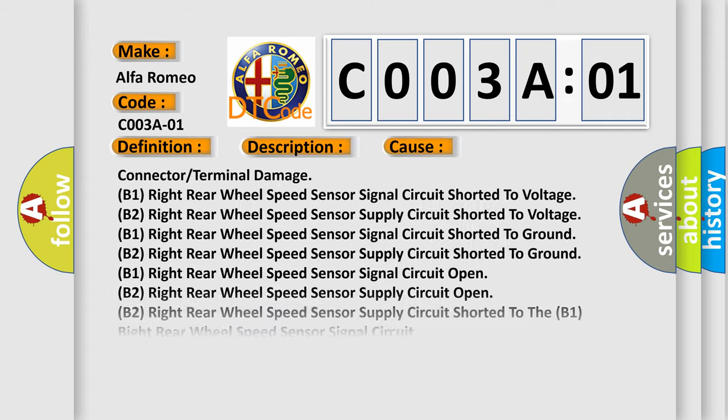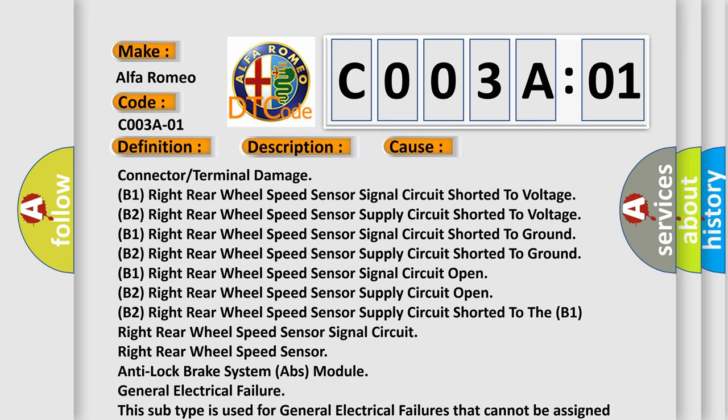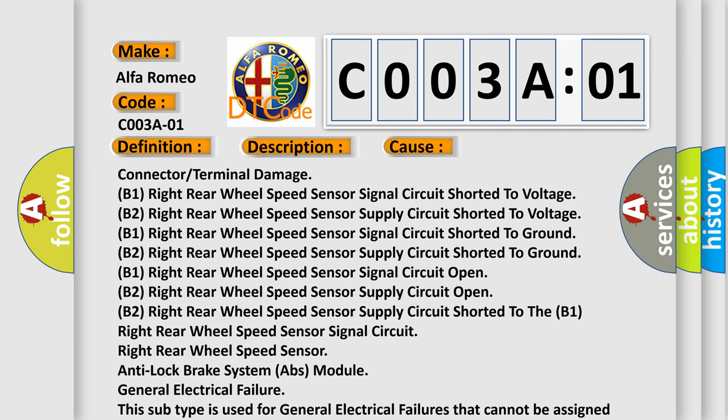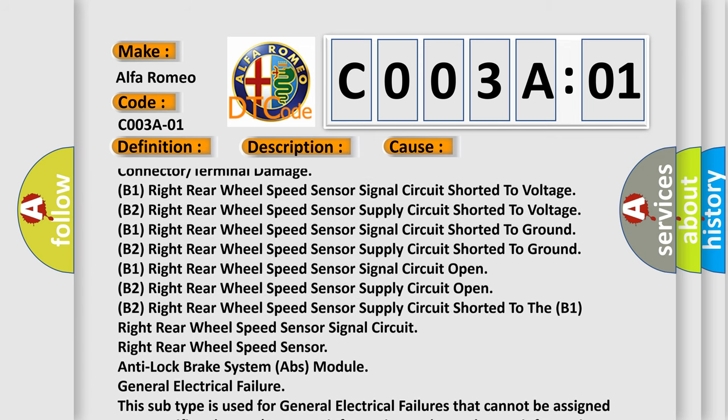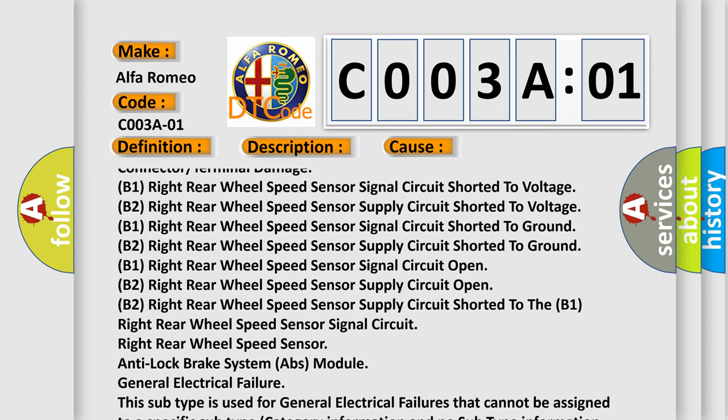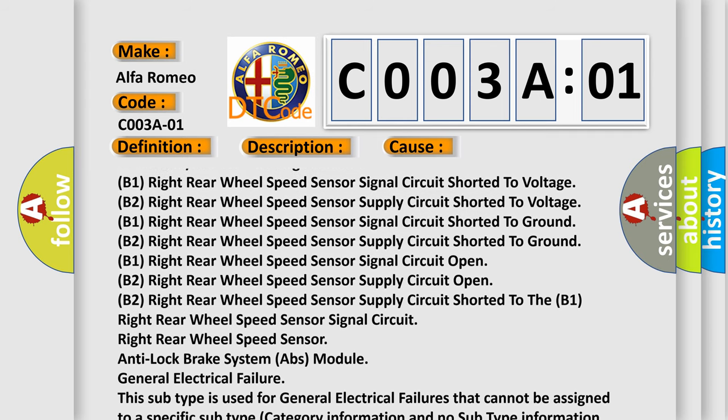This diagnostic error occurs most often in these cases: Connector or terminal damage B1, right rear wheel speed sensor signal circuit shorted to voltage B2, right rear wheel speed sensor supply circuit shorted to voltage B1.